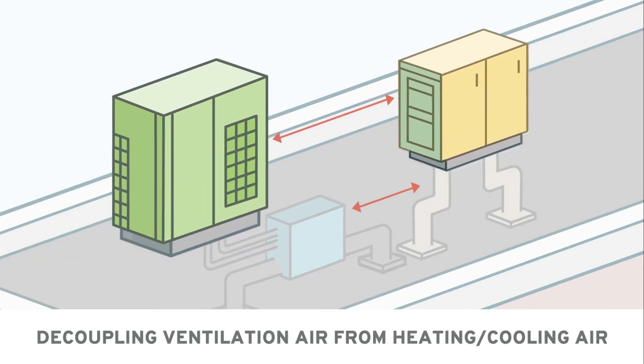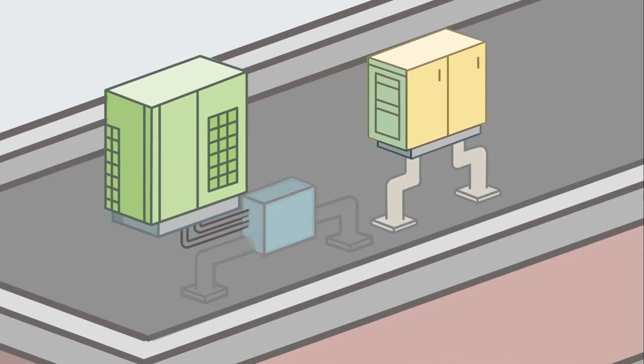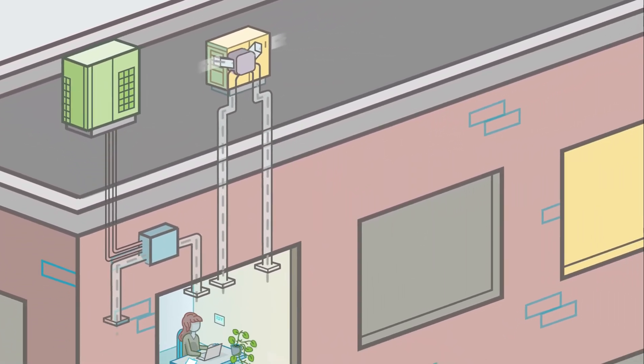By fully decoupling the ventilation air from the primary heating and cooling air, this approach provides filtered, non-recirculated outdoor air into building interiors.